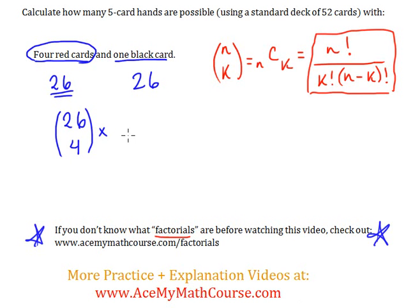And we're going to multiply that. Why do we multiply again? Because the word 'and' when we're dealing with this type of problem will usually mean multiplication. So, and one black card. So from the 26 black cards, we're going to choose one of them. So 26 combination four times 26 combination one.